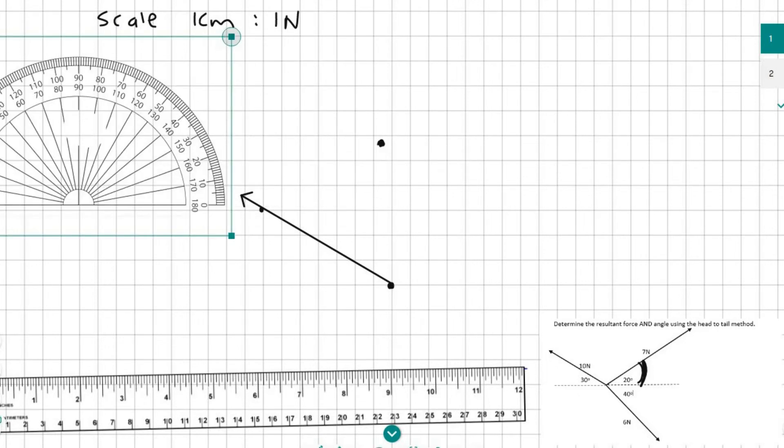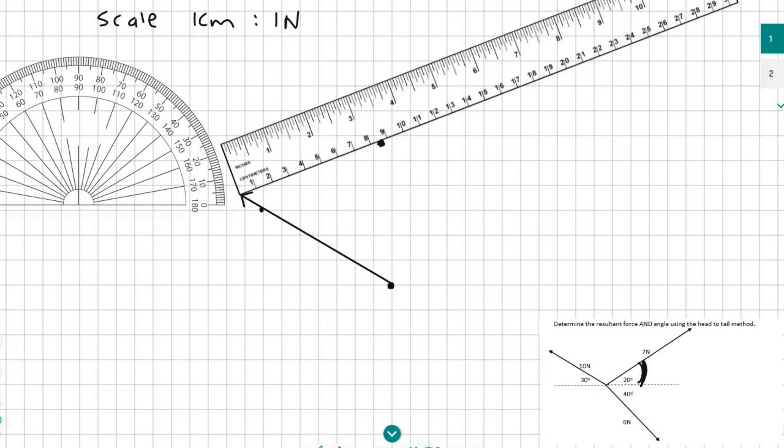Then what I'll need to do is take my ruler and connect those two points using a 7 centimeter line. There I've positioned my ruler and now I'll do 7 centimeters. So you can see how that line has been drawn.